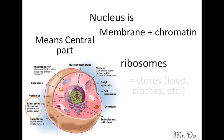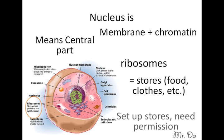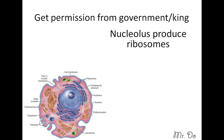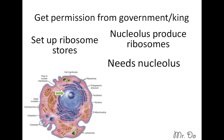Next, we're going to talk about ribosomes. Remember, ribosomes are equivalent to stores — we have a bunch of free-floating ones, and there are those that are attached. The ribosomes are equivalent to stores that produce food, clothes, and such. But in order to set up stores, you need permission from either the government or the king — and remember, that's equivalent to our Nucleus. So in other words, the Nucleus produces ribosomes.